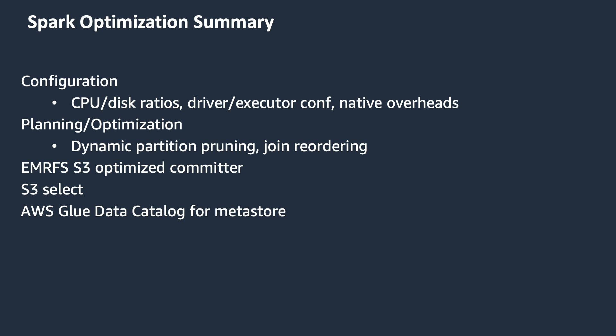These include the EMRFS S3-optimized committer, which is an alternative output committer implementation optimized for writing files to Amazon S3 when using EMRFS. The committer is used for Spark jobs that use Spark SQL, DataFrames, and Datasets to write Parquet files. The EMRFS S3-optimized committer improves application performance by avoiding list and rename operations done in S3 during job and task commit phases.